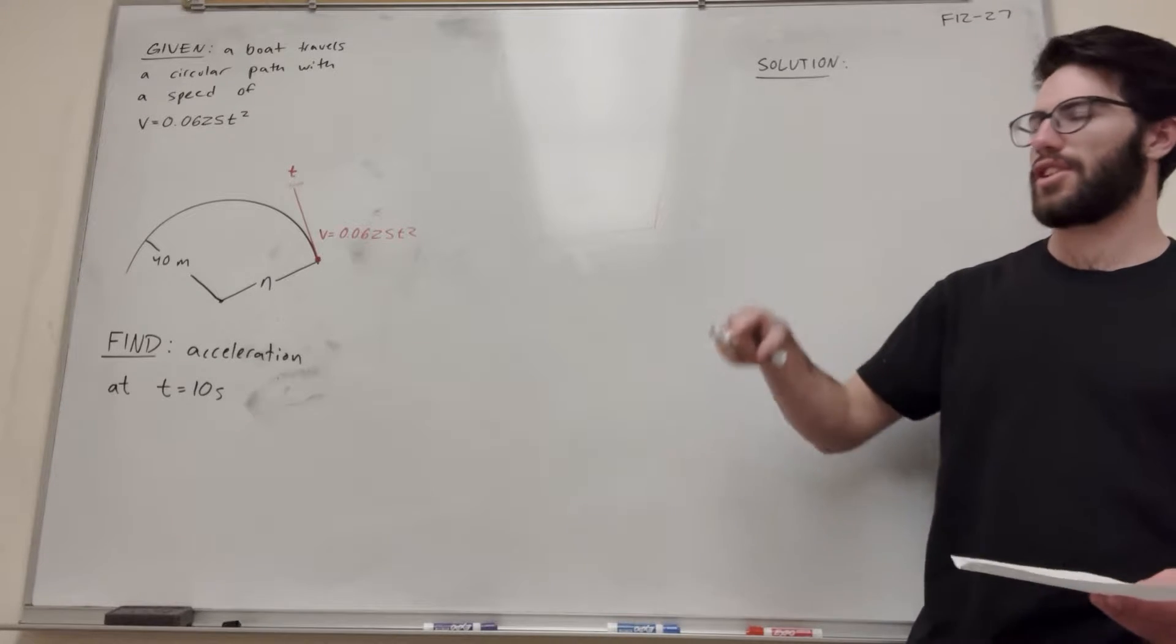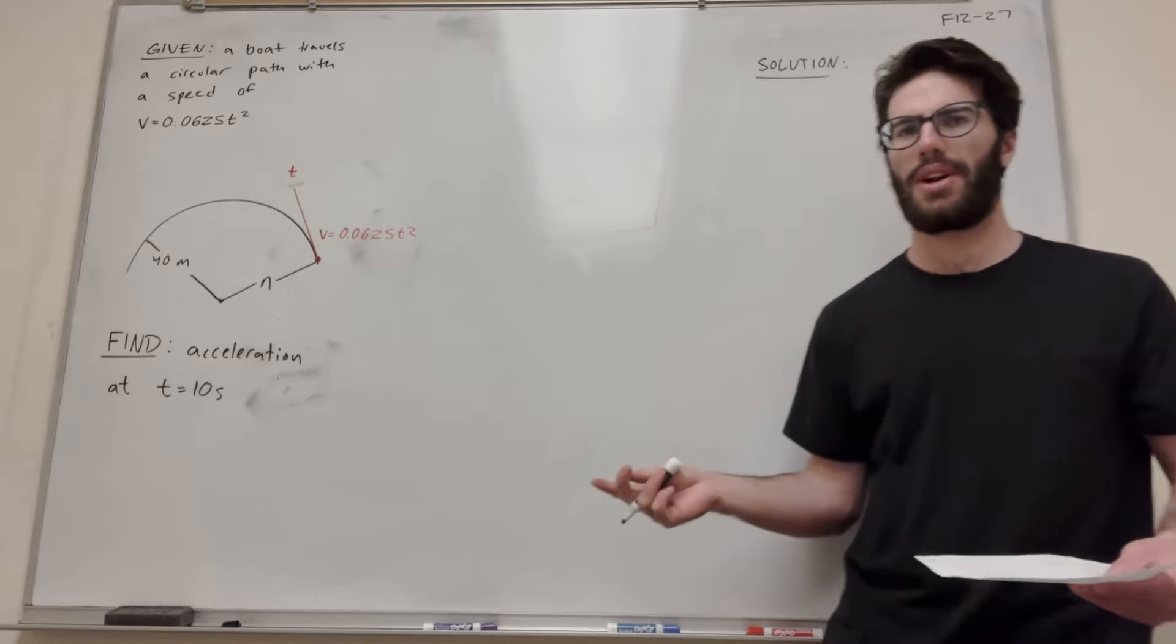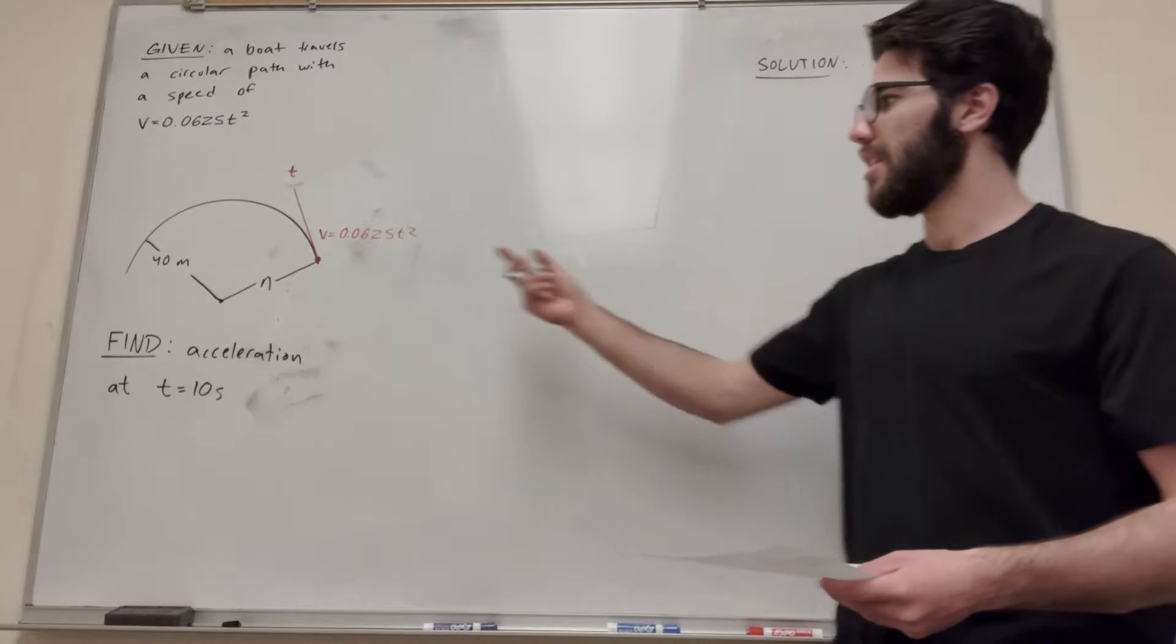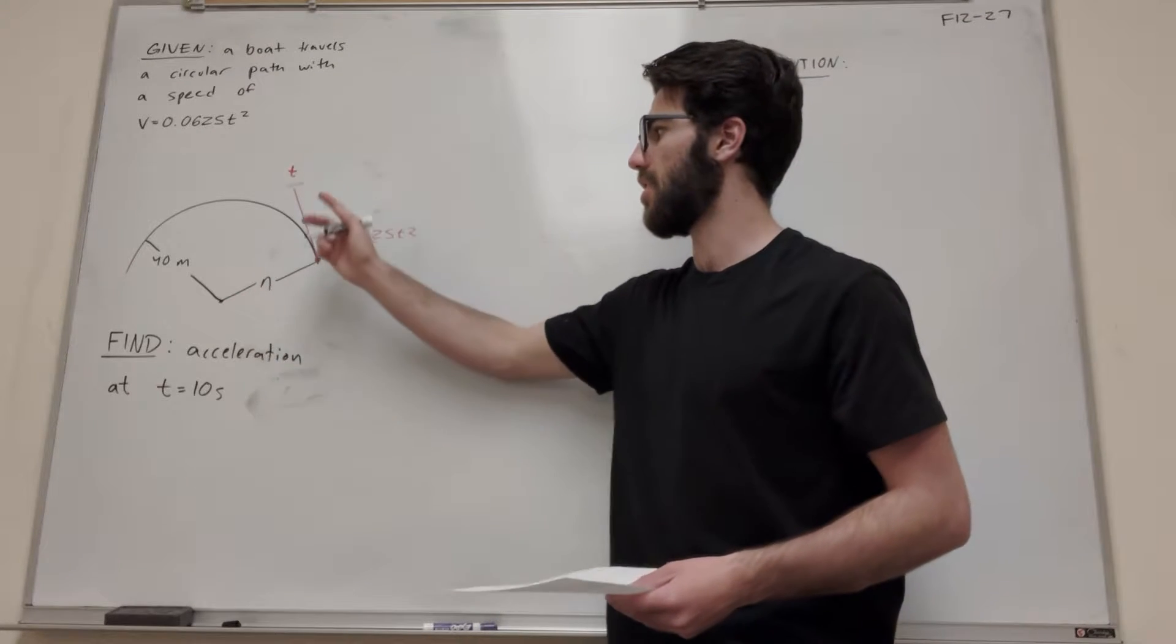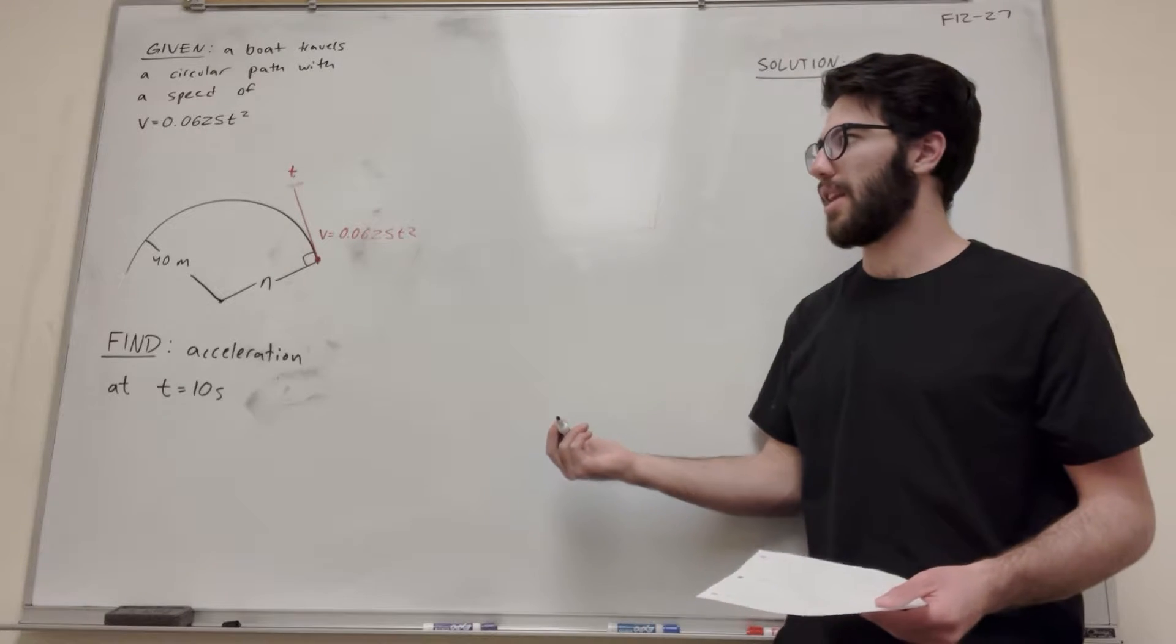When we have a boat traveling a circular path, there's a whole lot of coordinate systems we can use, but the most useful one is going to be the normal tangent coordinate system. We have our normal curve and then our tangent curve, and these are at a right angle to each other, so we can make our coordinate system out of those.